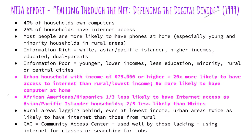From the introduction, they discussed differences between information-rich and information-poor people. Those with access are typically of white or Asian Pacific Islander ethnicities, from higher incomes, with more education, and from dual-parent families. Those lacking resources are typically younger, of lower incomes, less education, specific minorities, and usually in rural areas or central cities. A striking statistic: an urban household with income of $75,000 or higher is 20 times more likely to have internet access than rural or lowest-income families, and nine times more likely to have a computer at home.